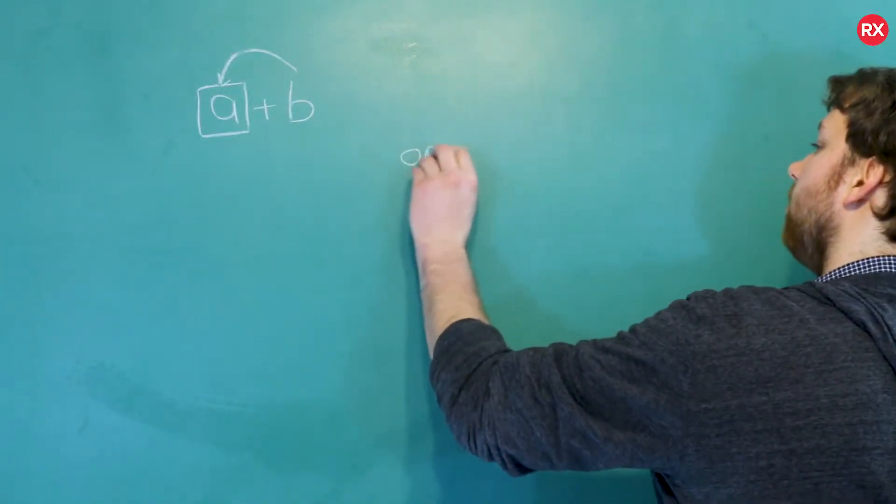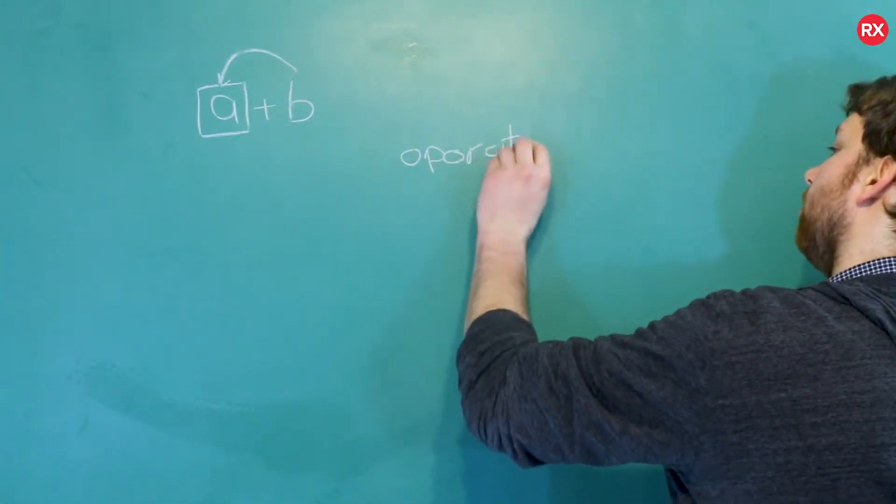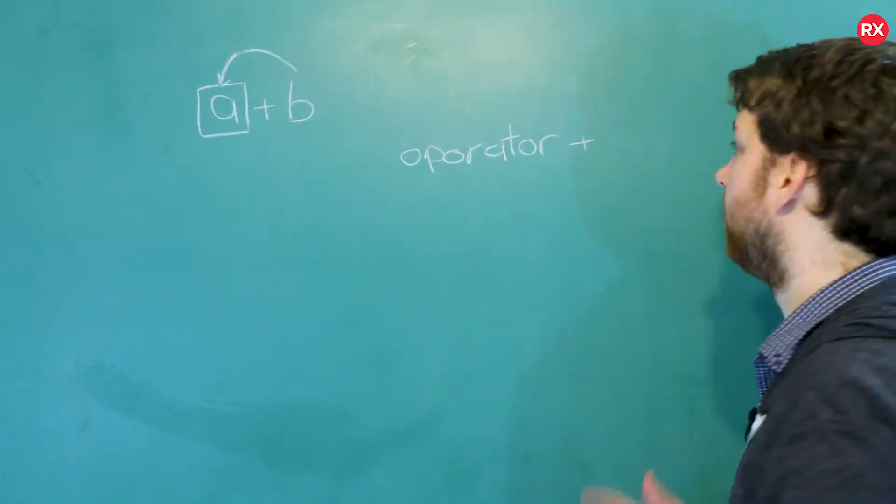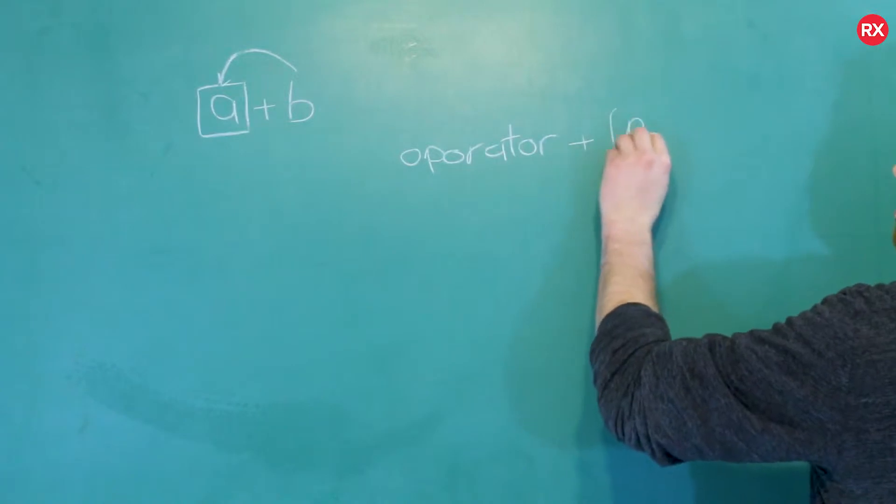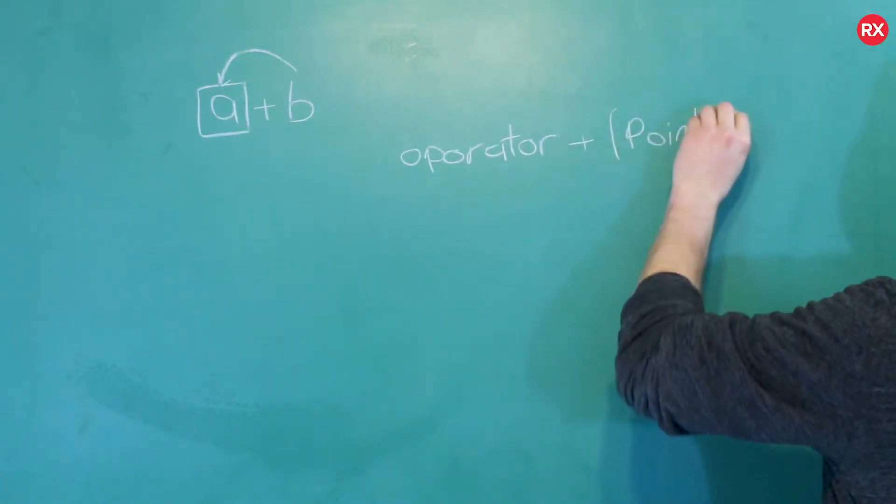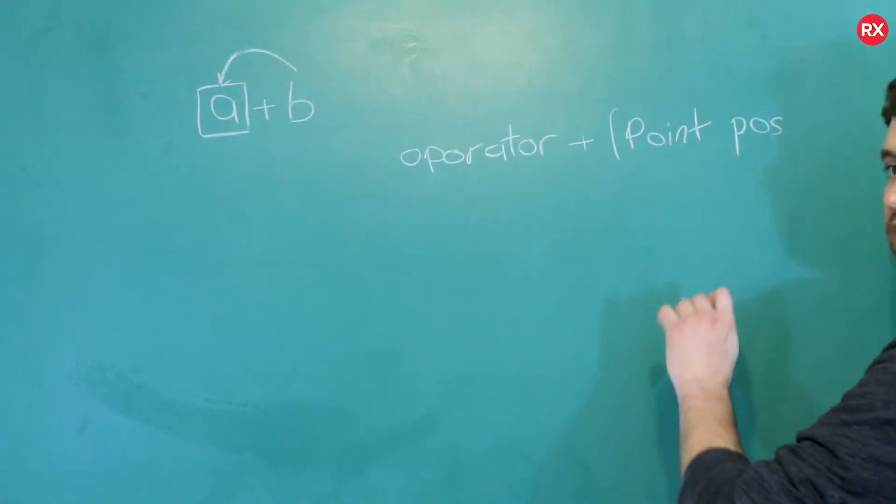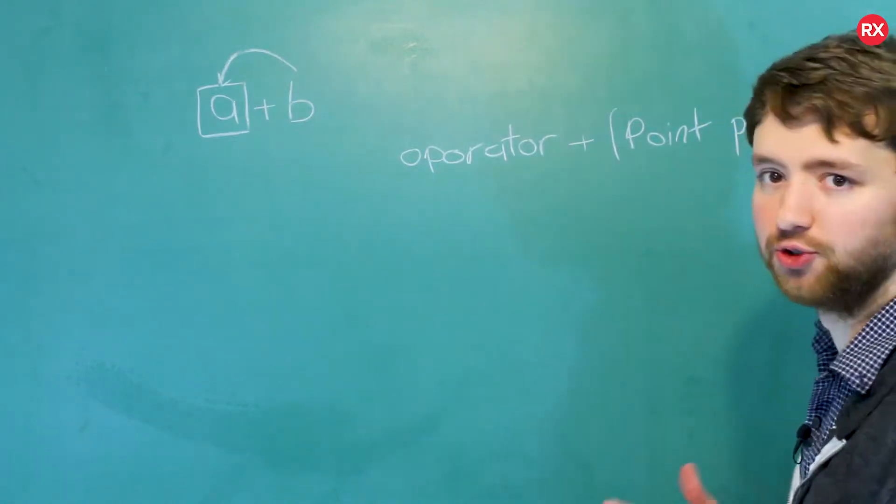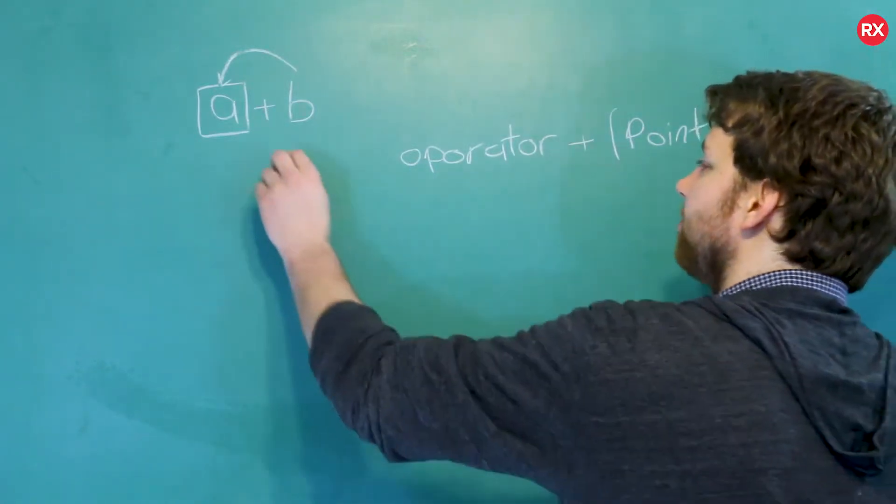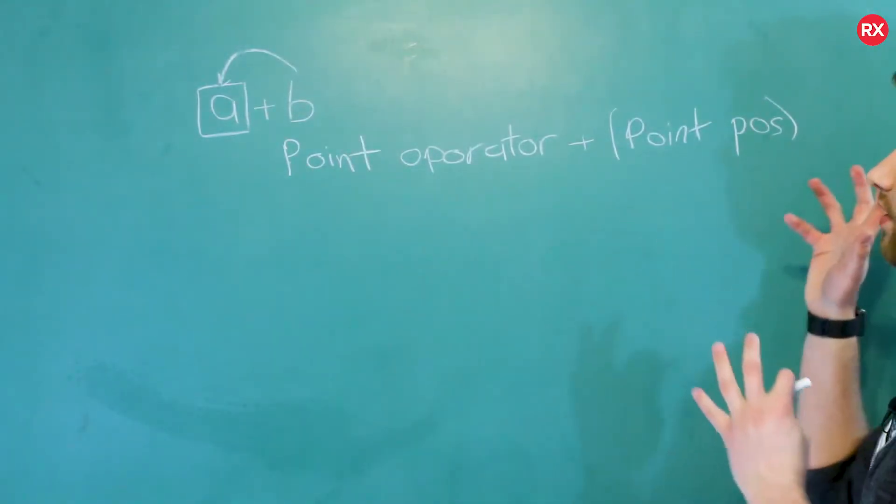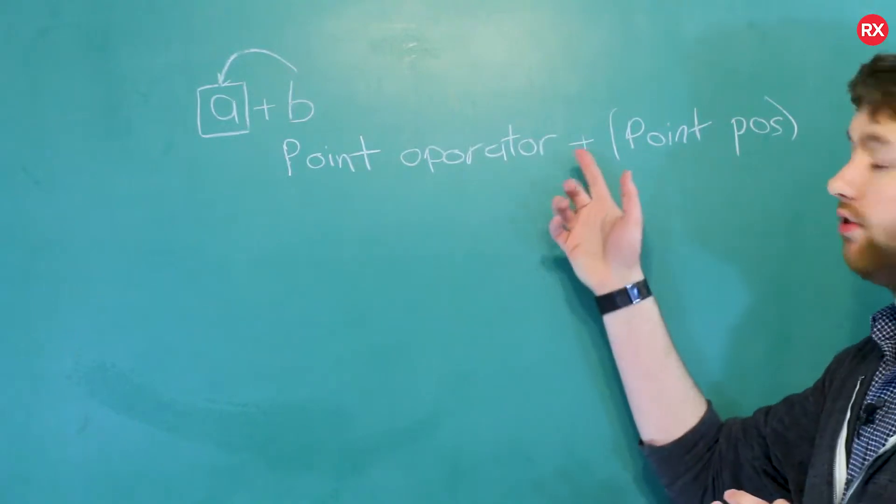We're going to say operator, and then we put what operator we're overloading, the plus sign. And we take one point as an argument. You can call it whatever, we'll just call it pose for position. And this is going to return a point. So here is the signature for defining an operator overload for the plus operator.